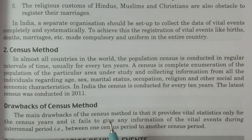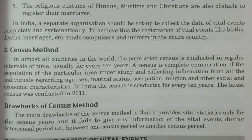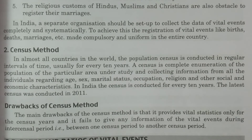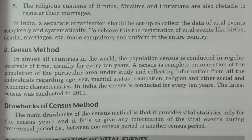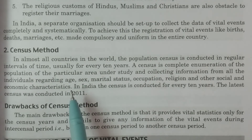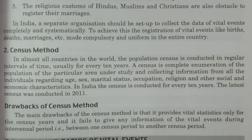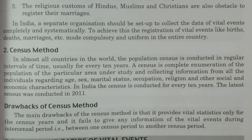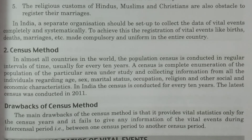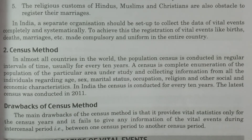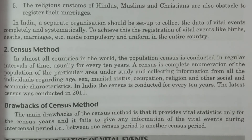What are the differences between the census method and the registration method? In the registration method, the person has to approach the organization and inform them that an event occurred — a birth, death, or marriage. Whereas in the census method, the enumerator comes and collects the data. This is what distinguishes registration method from census method — these are the two important sources of vital statistics. Thank you very much.